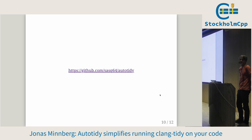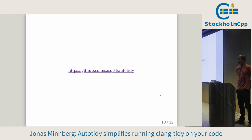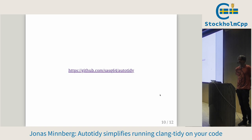You go through your code base once to get the configuration file and then you can reapply it. Yes, this is basically to create a Clang Tidy config that says which checks to ignore. You would probably do it once, or maybe when you get a new version of Clang Tidy you'd want to do it again because you get new checks, or if you change your code base dramatically, you do it again.